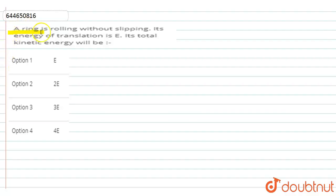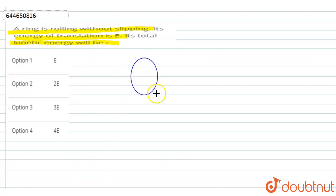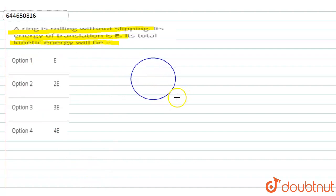In this question, it is given that a ring is rolling without slipping. Its translational kinetic energy is E. We need to find its total kinetic energy. Let us consider this is a ring.